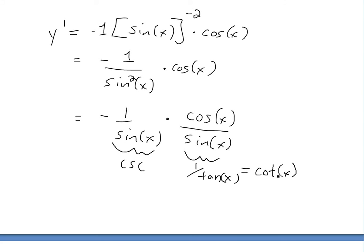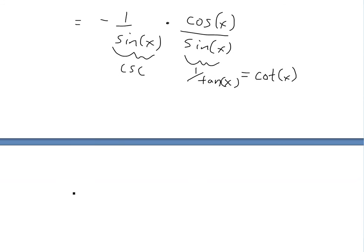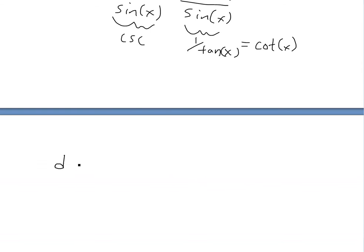So we just plug that in and we will get, if I write it all down, d cosecant of x over dx, or derivative of cosecant of x, equals cosecant of x times cotangent of x.